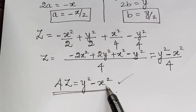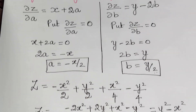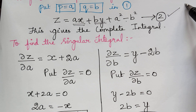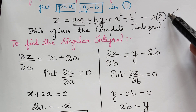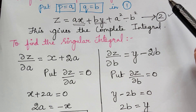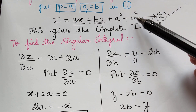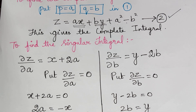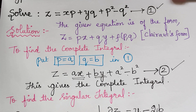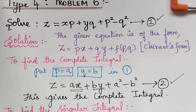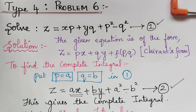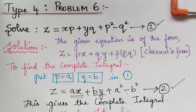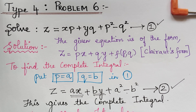So we have found the singular integral as well as the complete integral. First we found the complete integral, and then by eliminating the arbitrary constants a and b we obtained the singular integral. Hope you have understood this problem. This is one of the significant problems from the examination point of view. In our next video, we will solve problem 7. Thank you.